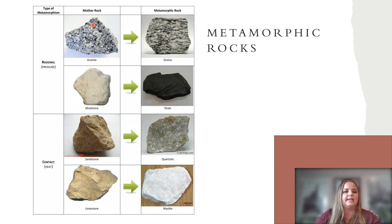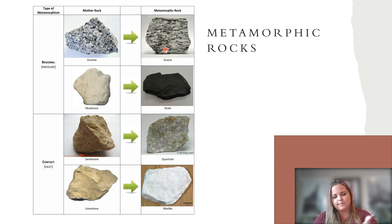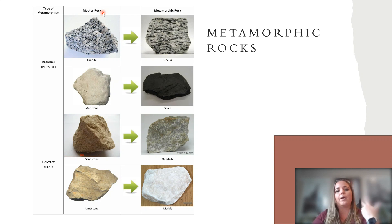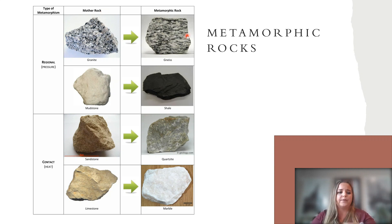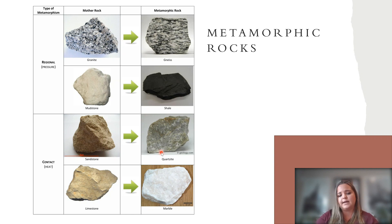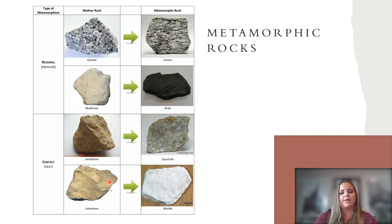Some metamorphic rocks you might see: granite, an igneous rock, transforms into gneiss, a metamorphic rock. The original rock before metamorphism is called the parent rock, mother rock, or protolith — all three terms mean the same thing. A mudstone (sedimentary) may turn into shale. A sandstone (sedimentary) would turn into quartzite. A limestone (sedimentary) would turn into marble. These are some of the original rocks and their corresponding metamorphic products.